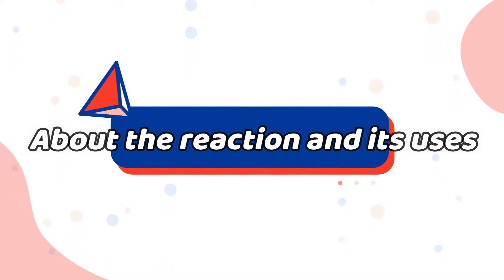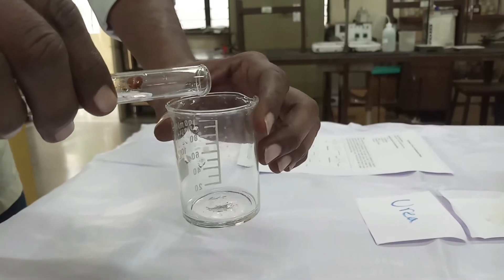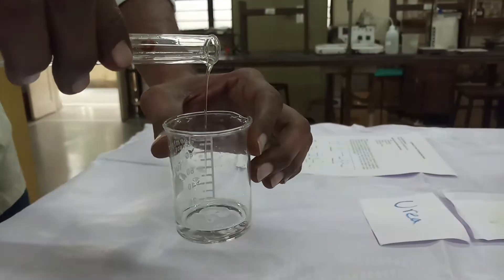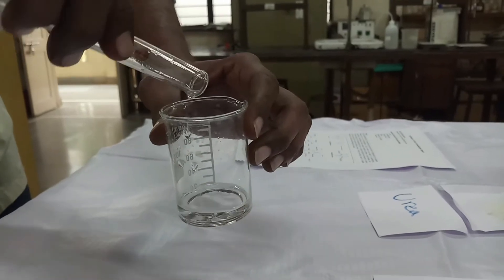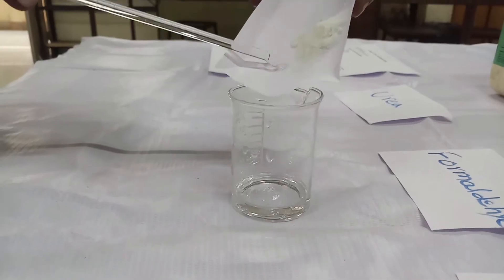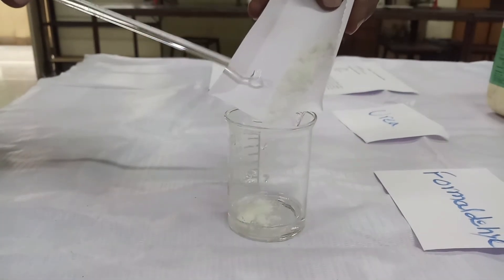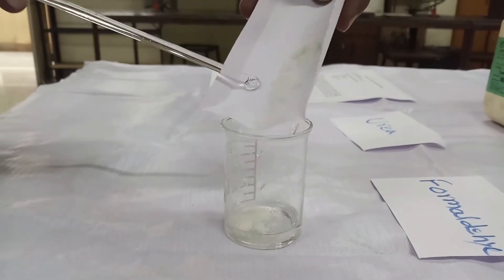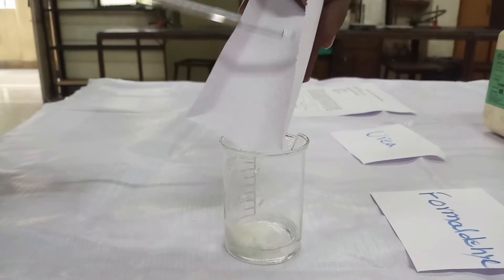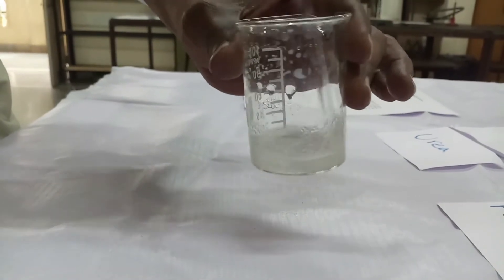So let's begin with the experiment. Place 5 ml of 40% formaldehyde solution in a 100 ml beaker. Add about 2.5 grams of urea with stirring until a saturated solution is obtained. Stir the solution with a glass rod.